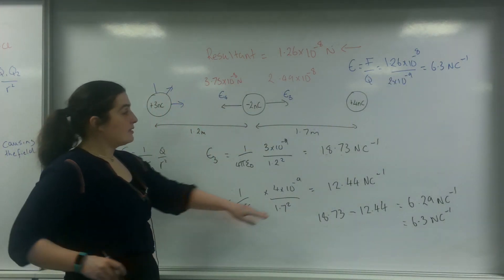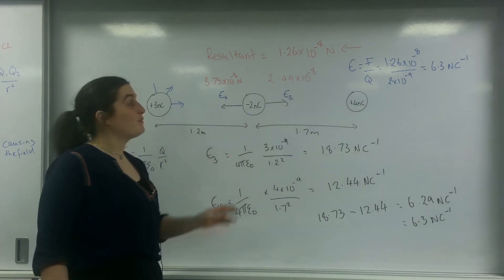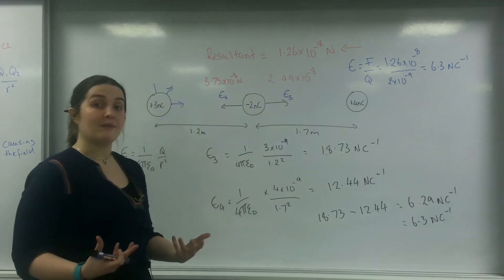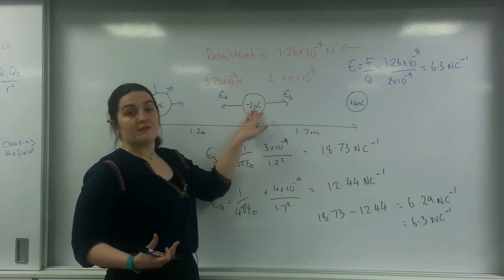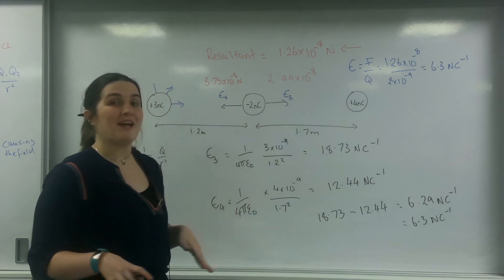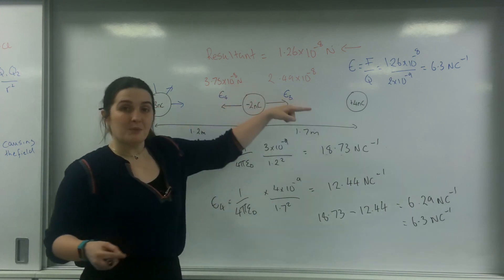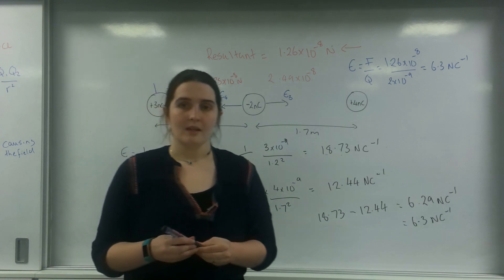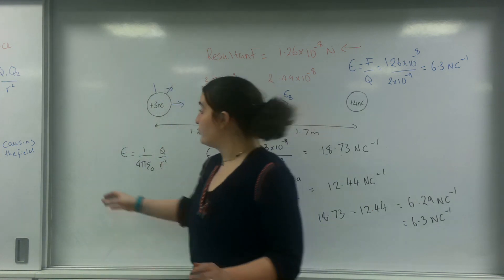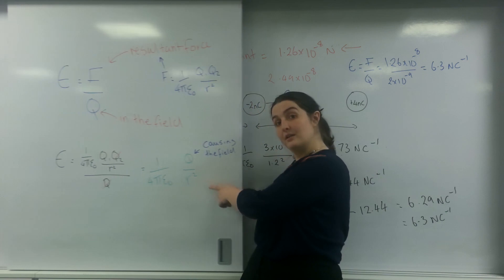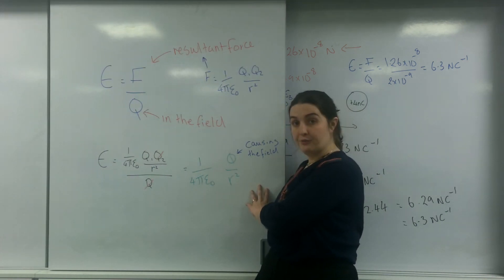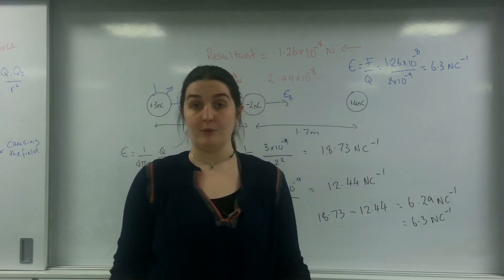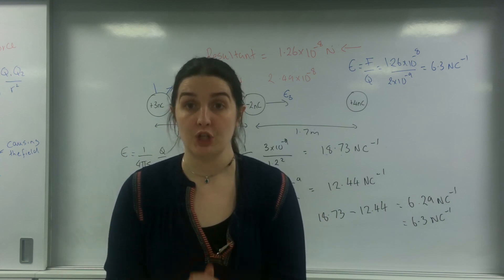Since the larger field is bigger, the resultant goes in that direction — the same direction as calculated before. The resultant force is attractive because this is a negative charge, so it moves in the opposite direction to the field. The field goes this way, but the force goes the other way. That is how to find the electric field strength of a radial field and use it to work out the resultant electric field strength between two charges.